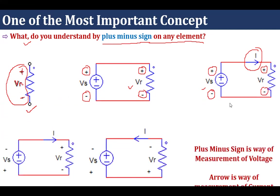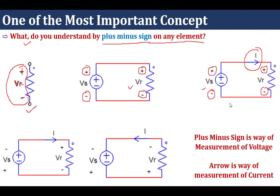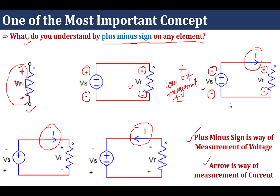The plus-minus sign is the way of measurement. And what is the arrow? The arrow, which we have seen in multiple circuits, is the way of measurement of current. So from this point, you have to keep in mind that the plus-minus sign is the way of measurement of voltage, whereas the arrow marking is the way of measurement of current.